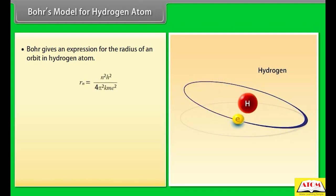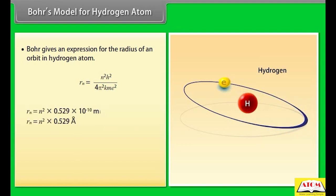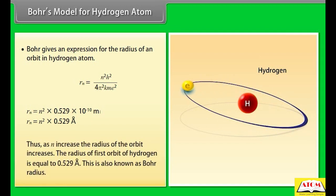Rₙ = n² × 0.529 × 10⁻¹⁰ meter, or Rₙ = n² × 0.529 angstrom. Thus, as n increases, the radius of the orbit increases. The radius of the first orbit of hydrogen equals 0.529 angstrom. This is also known as the Bohr radius.